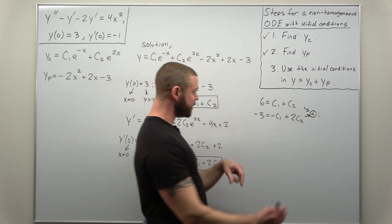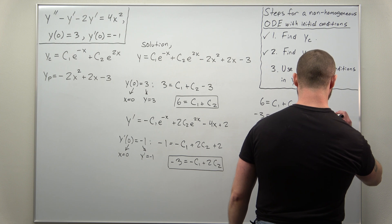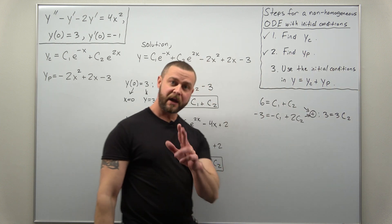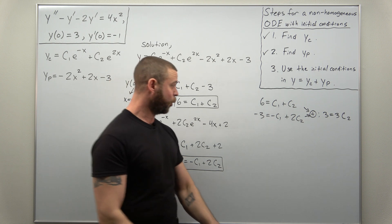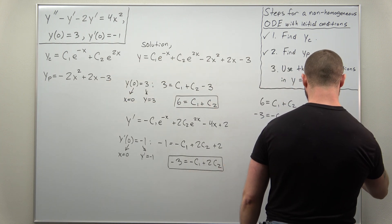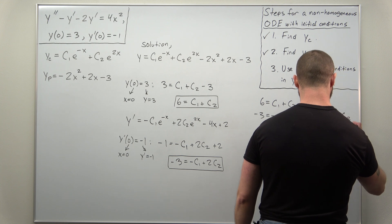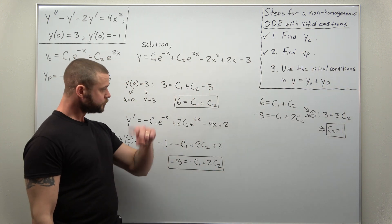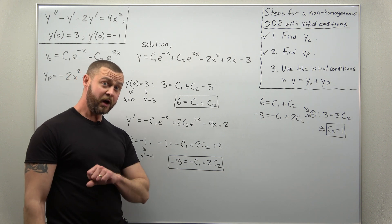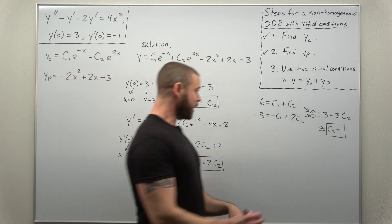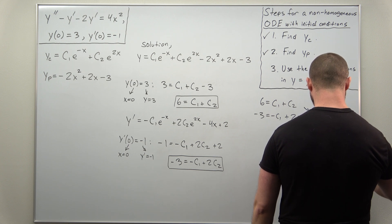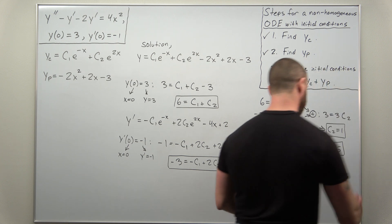Equals 3C2. And that's going to imply that C2 is one. And if you go back to your first equation, if C2 is one, that means C1 should be five.